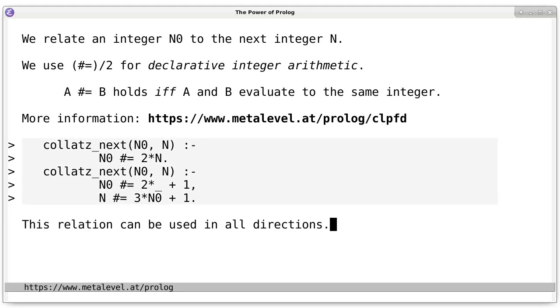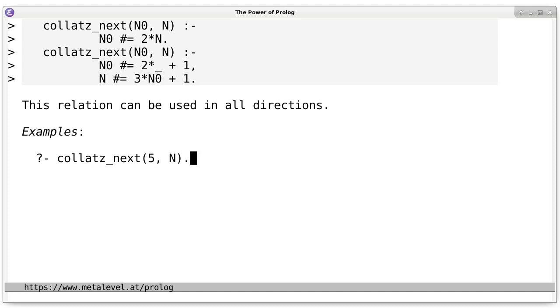And we can use this predicate in all directions. For example, we can use it to compute the next integer in the sequence. For example, the next integer after 5 is 16. And we can also use it in other directions. For example, we can use it to ask what are predecessors of some integer. And in this case, we get two solutions and see that possible predecessors of 16 are 32 and 5. And we can also post the so-called most general query where we ask for any answers at all.